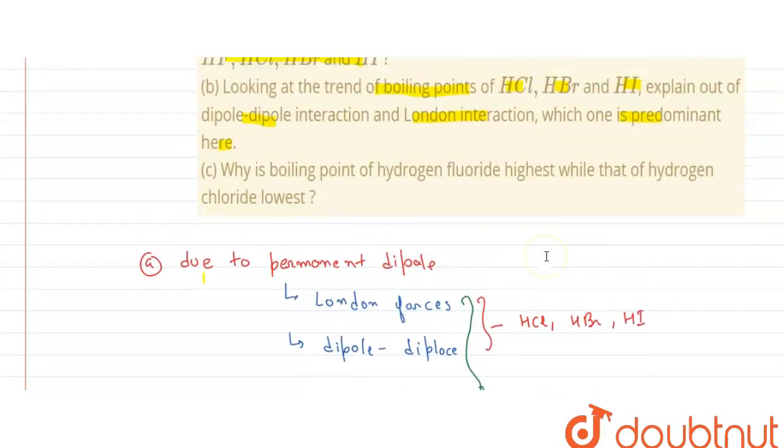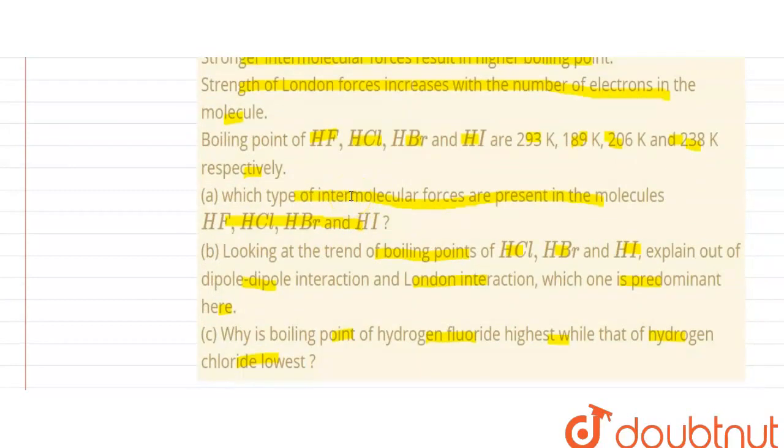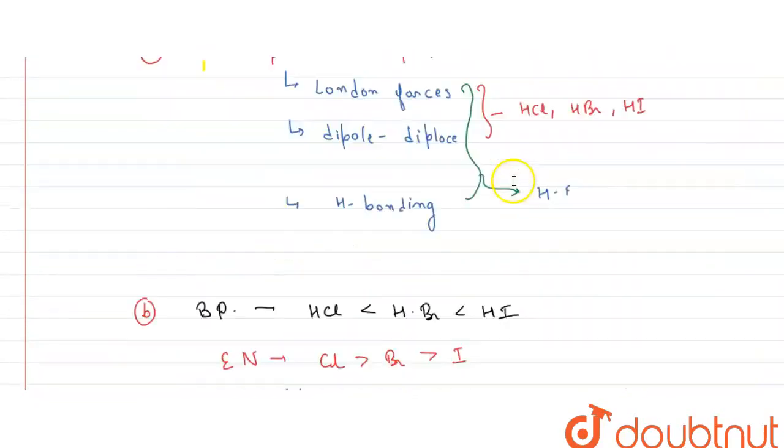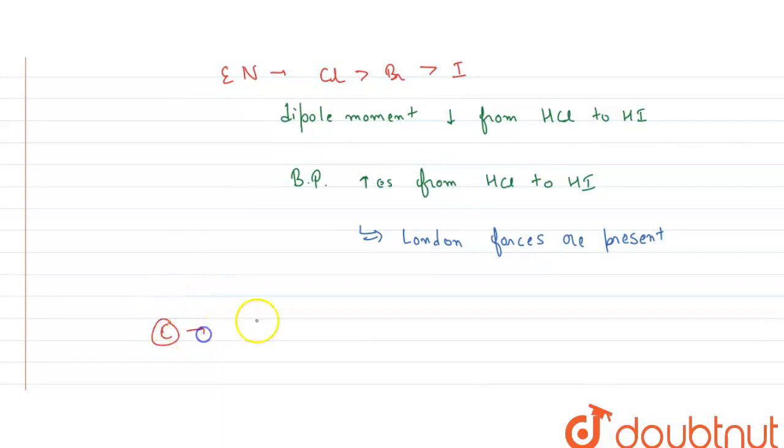Now let us come to the C part. The C part is why boiling point of HF is highest while that of HCl is lowest. So we can see that the boiling point of HF is 293K, which is the highest. So HF has highest boiling point because of intermolecular hydrogen bonding.